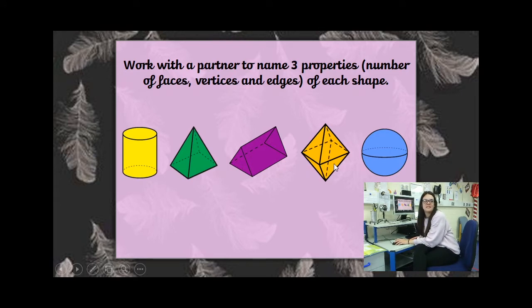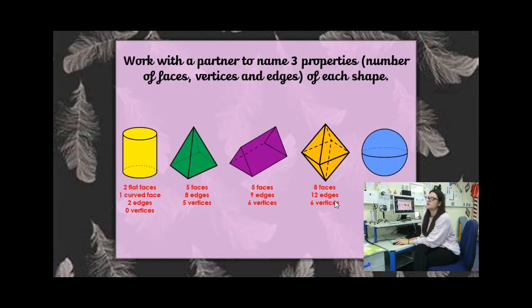Anyone know what this one is called? I had to remind myself of this one this morning. A diamond is a 2D shape — this is an octahedron. Okay, an octahedron!